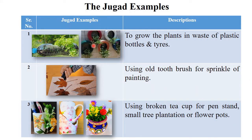Let's see some examples. The first example is plastic bottles. Plastic bottles like Bisleri bottles and other plastic wares are very difficult to decompose. So you can use those plastic bottles or tires to grow plants. This is the best Jugaad example — using plastic wares or tires for growing plants.